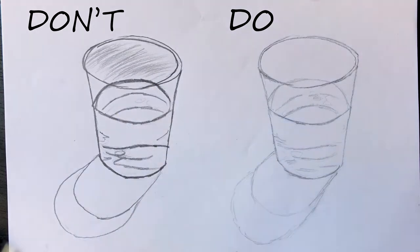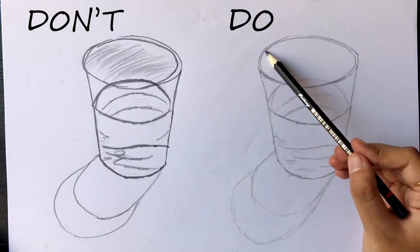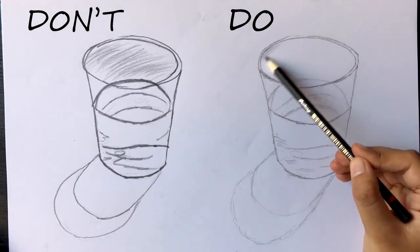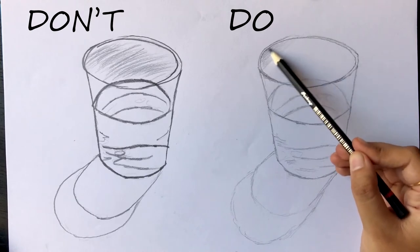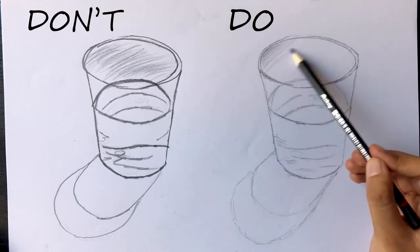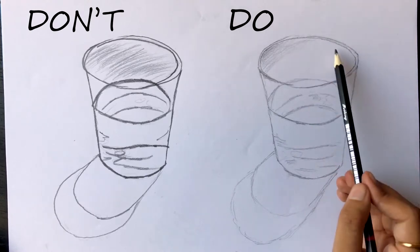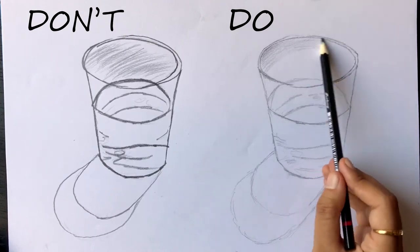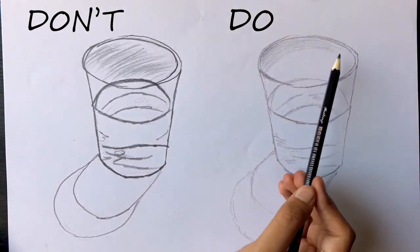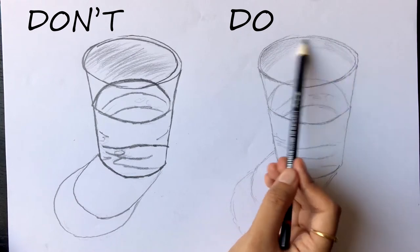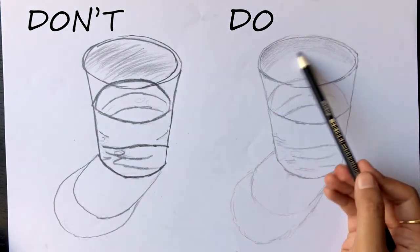Instead, what we want to do is shade in the same direction as the area we are covering. For example, the rim on the top is curved, so I will be shading in curved strokes. Also, as you can see, there is a little distance between each stroke and all the strokes have the same darkness. It is not like there are some random dark lines in the middle.